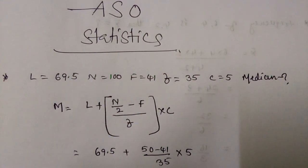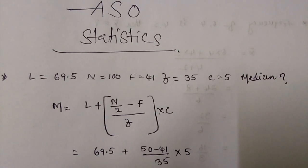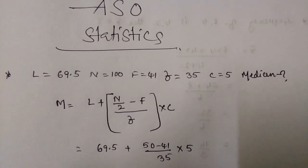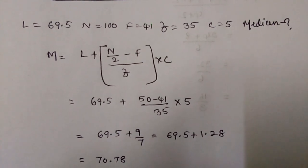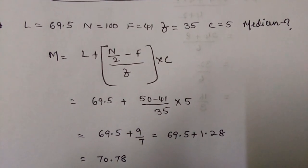So 50 minus 41 by 35 into 5, so that equals 69.5 plus 9 by 7 into 5.